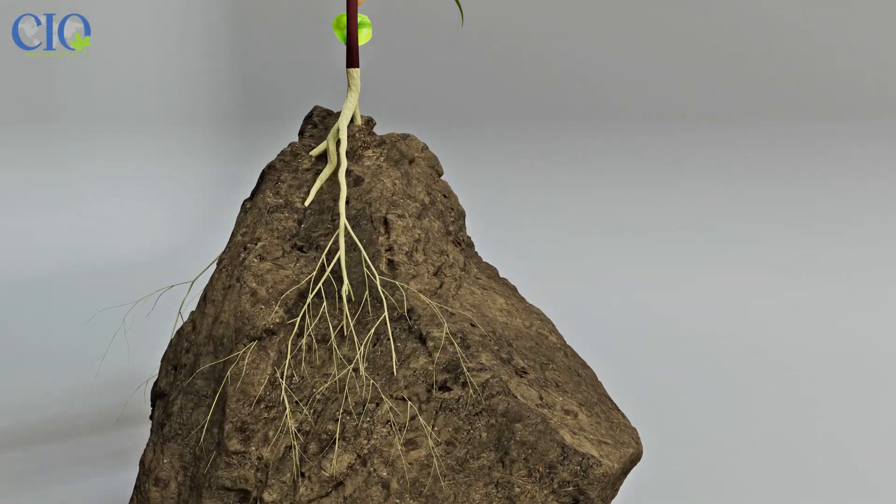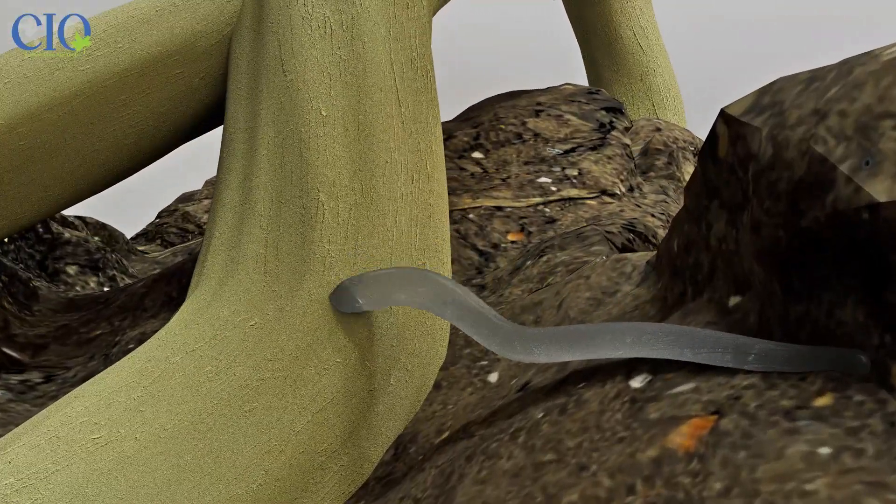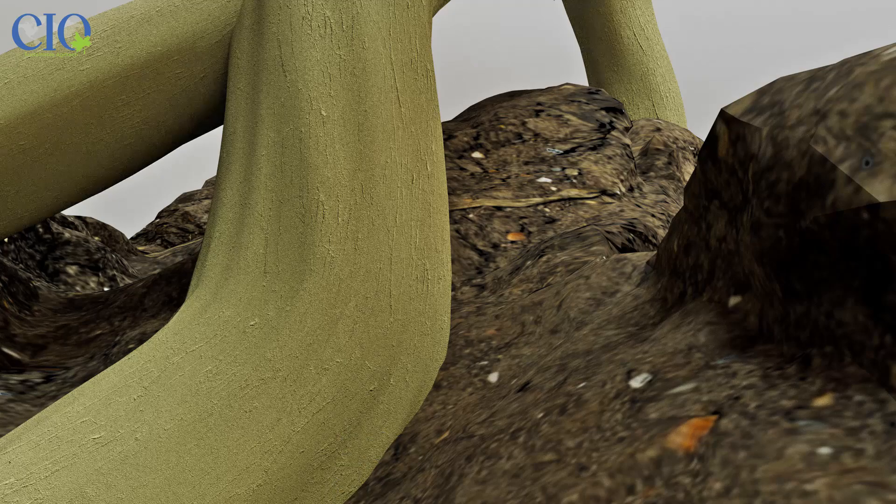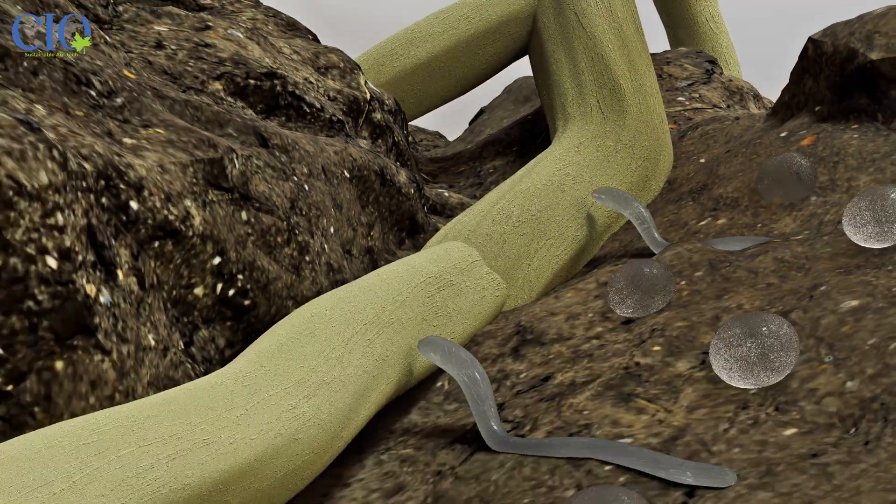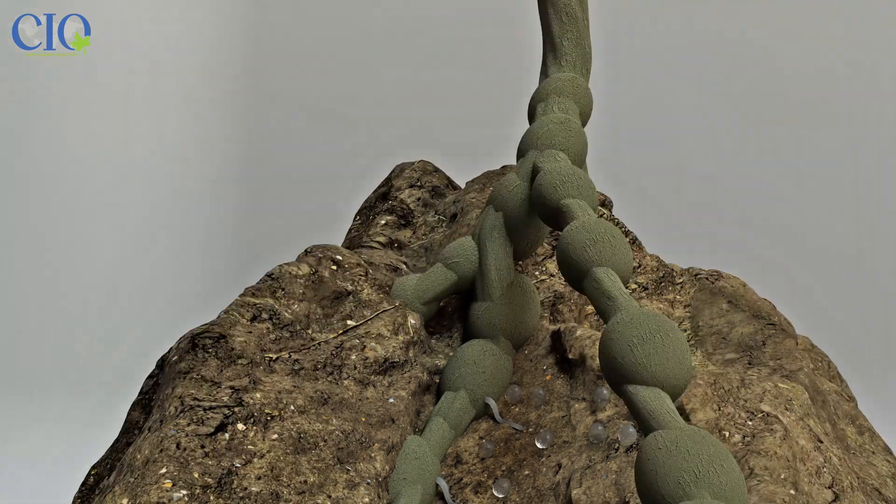Nematodes have a significant impact on our food security. Ectoparasitic nematodes pose a greater threat than endoparasitic nematodes. Injuries resulting from nematode actions cause root galling and promote further invasion by pathogens like fungi and bacteria, causing severe crop losses.